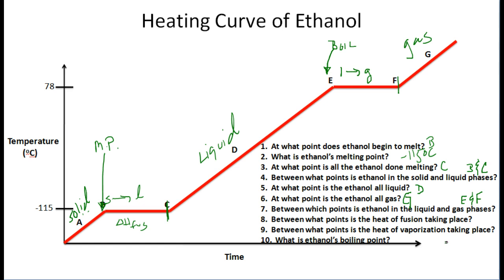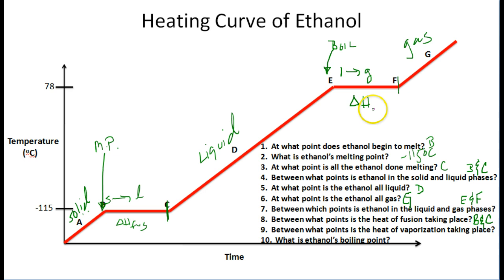Question eight: between what points is the heat of fusion taking place? The heat of fusion is the amount of thermal energy it takes to melt something. That is going to be between points B and C. Question nine: between what points is the heat of vaporization taking place? The heat of vaporization is the amount of energy it takes to turn a liquid into a gas. That takes place between points E and F on this heating curve.